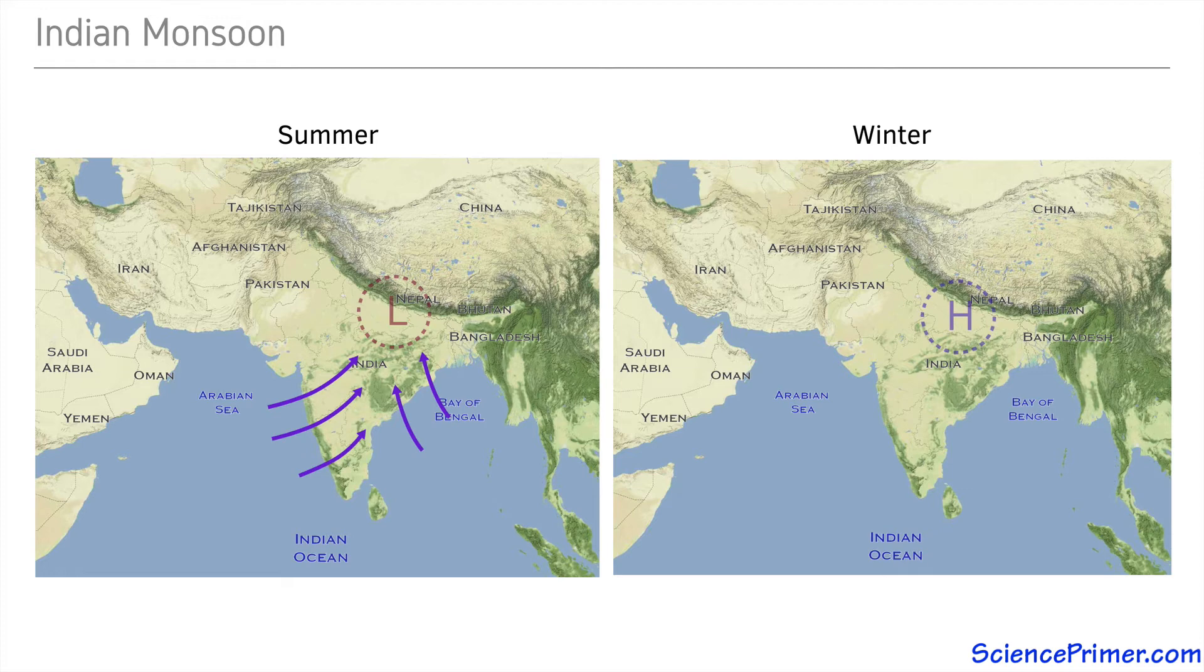In the winter, as the land cools more quickly than the surrounding water, a high-pressure system forms over the subcontinent, causing the reversal of the winds that define the monsoon cycle. This change in wind direction brings cooler, drier, and calmer weather.